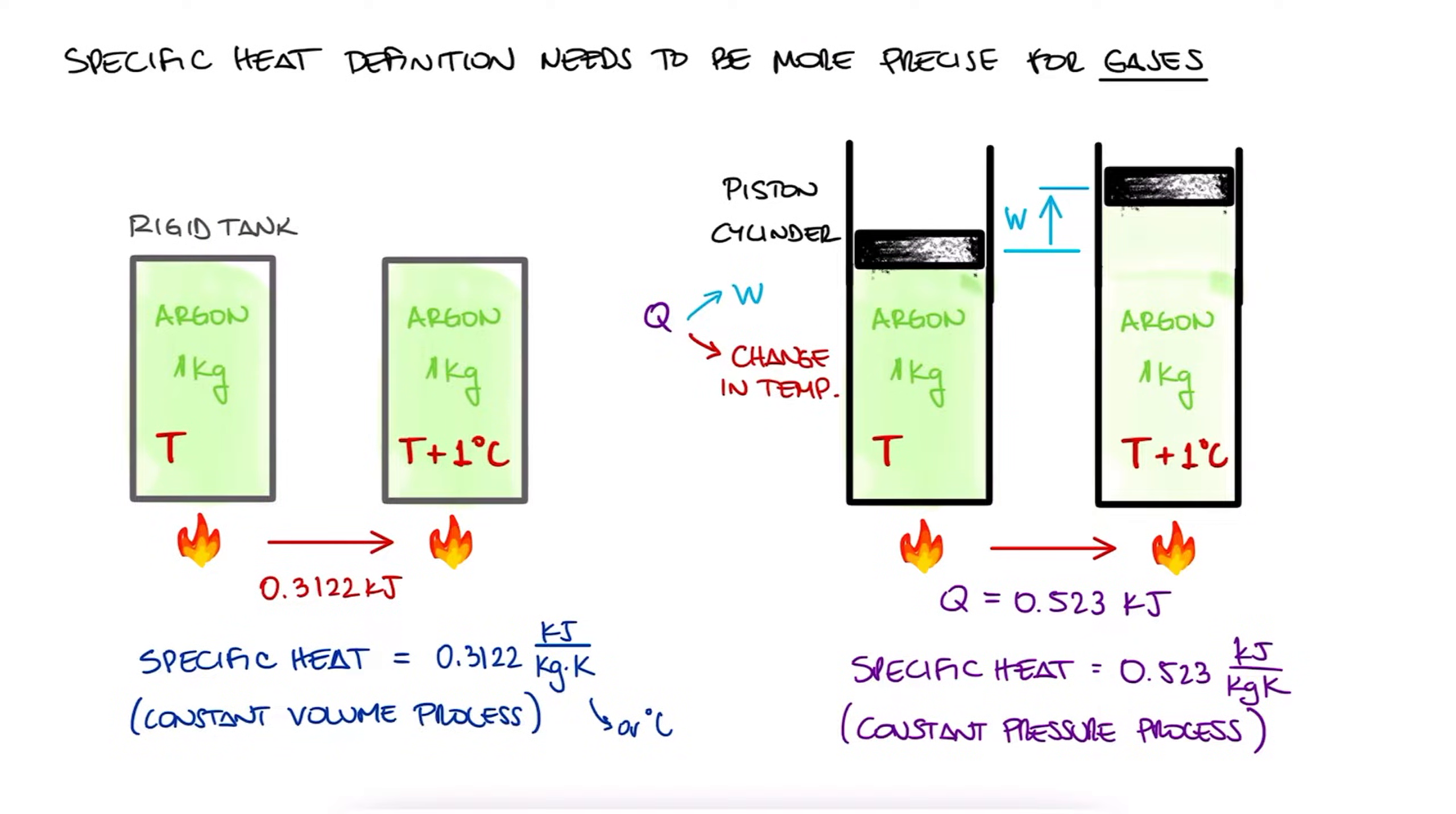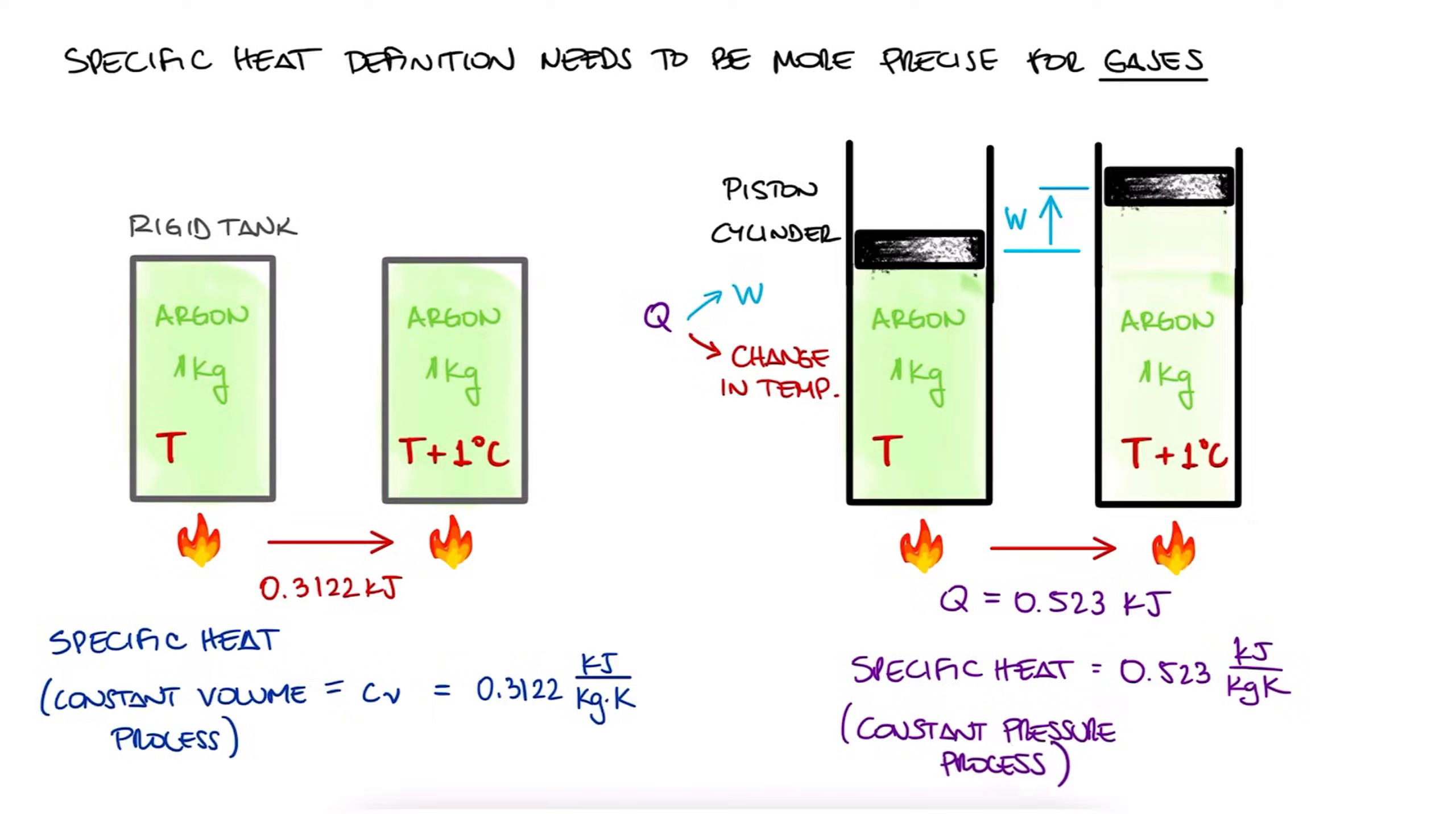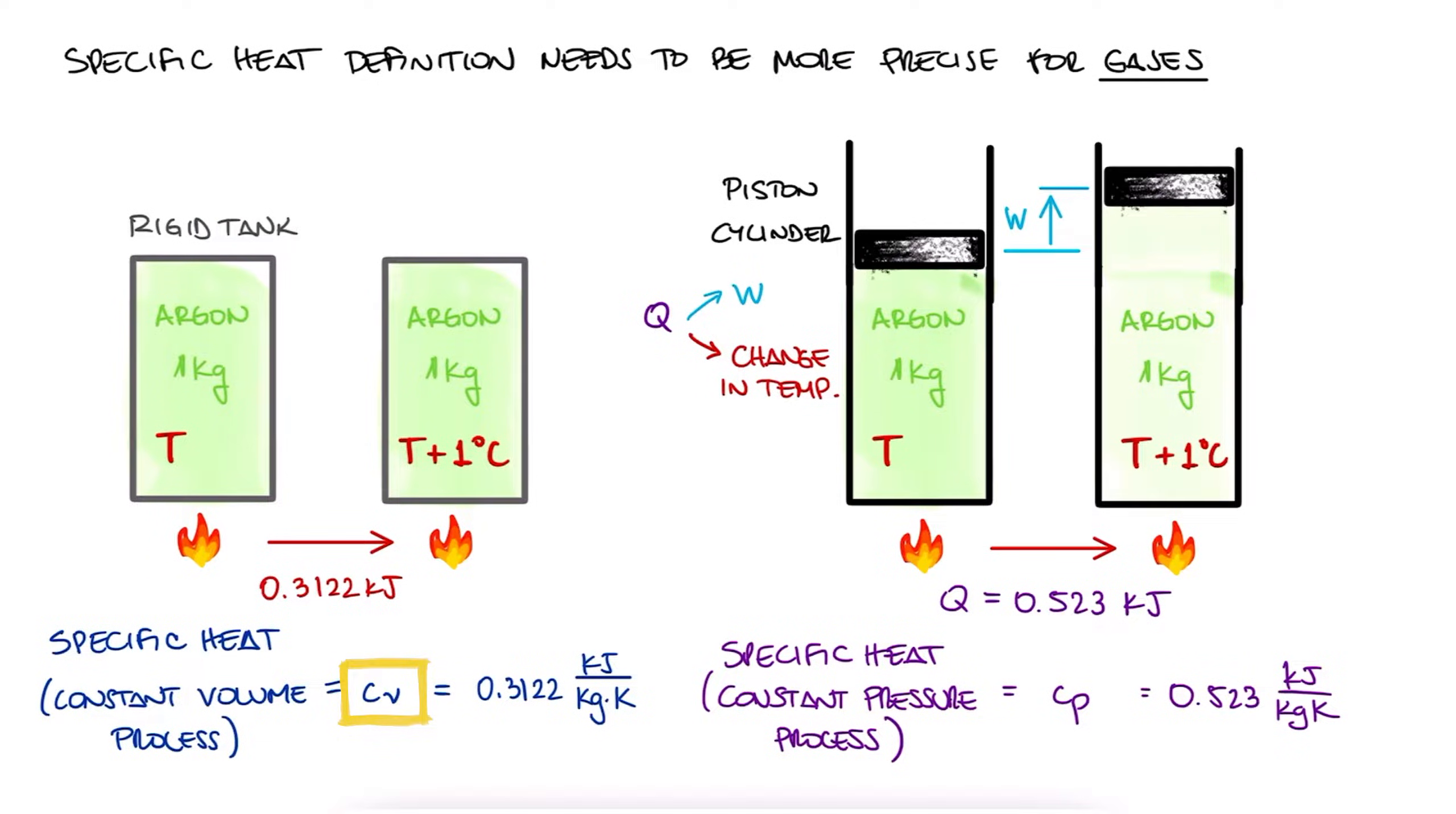In other words, for any substance we will be able to look up or calculate the specific heat at constant volume, Cv, and the specific heat at constant pressure, Cp. That's lowercase c, sub v, and sub p. And this distinction makes sense.